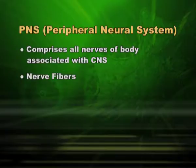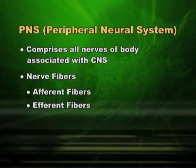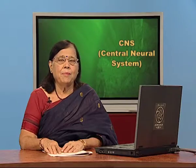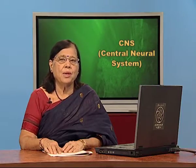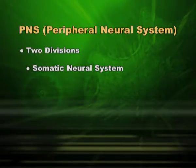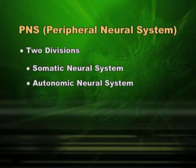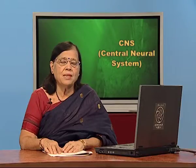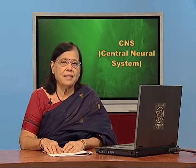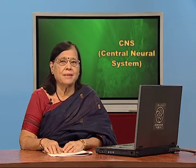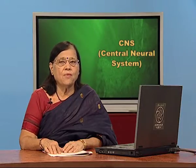The nerve fibers which belong to the PNS are of two types: afferent fibers and efferent fibers. Afferent fibers take the message to the CNS and efferent fibers bring back the message. Both messages are important and that is how the PNS works in coordination. The PNS has two major divisions: the somatic neural system and the autonomic neural system. The somatic neural system connects distant cells in the skin to the main nervous system through PNS, taking the route of the spinal cord.